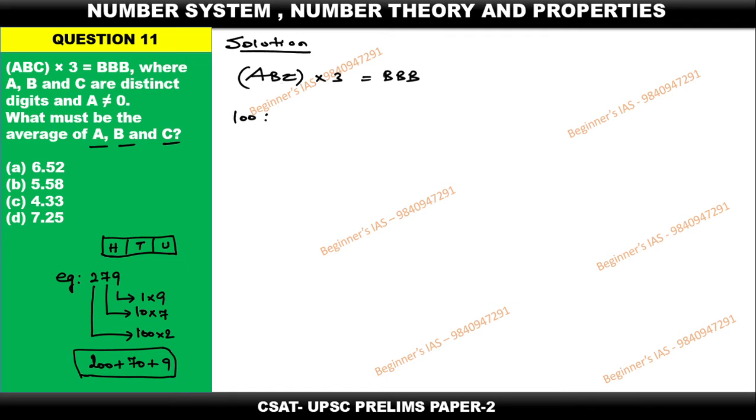C is in the unit place, B is in the tens place, A is in the hundreds place. So express it as (100A + 10B + C) × 3 = 100B + 10B + B.